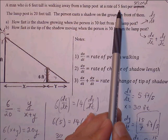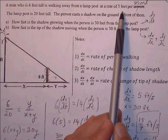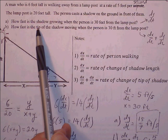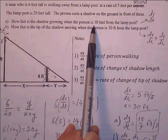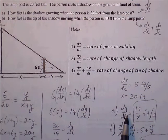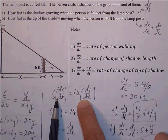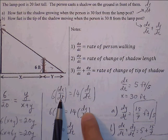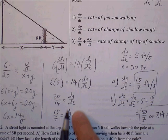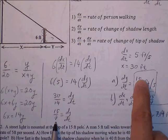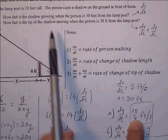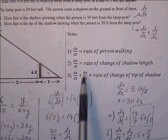dx/dt plus dy/dt — the rate of change of the person walking and the rate at which the length of the shadow is changing — gives the rate of change of the tip of the shadow. The tip of the shadow moves at a rate equal to the rate at which the person is walking plus the rate at which the shadow is lengthening. Here is the algebraic equation we are going to start with, and then we find the differentials and fill in known information.